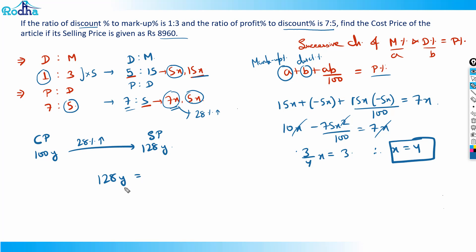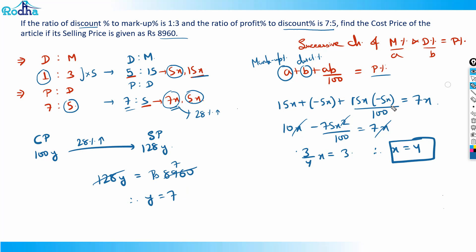Solving 128y = 8960: dividing both sides, 8960 ÷ 128 = 70. So y = 70. Therefore cost price = 100y = 100 × 70 = rupees 7000. That's the answer to this question.